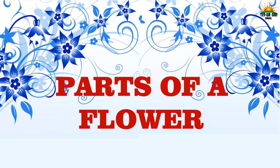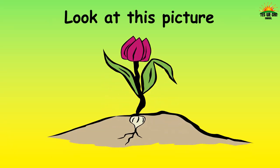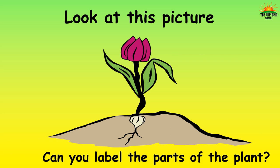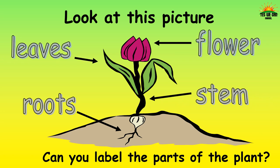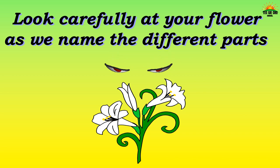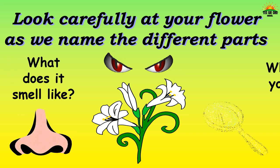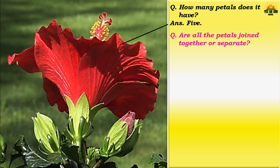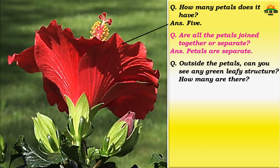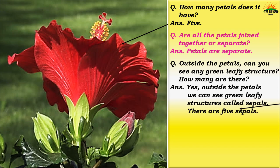Look at this picture — this is a plant. Can you label the parts? These are the roots, this is the stem, these are the leaves, and this is the flower. Look carefully at your flower as we name the different parts. What does it smell like? Petals are the colorful parts of the flower — this one has five petals, and the petals are separate. Outside the petals you can see green leafy structures called sepals — there are five sepals in this flower.